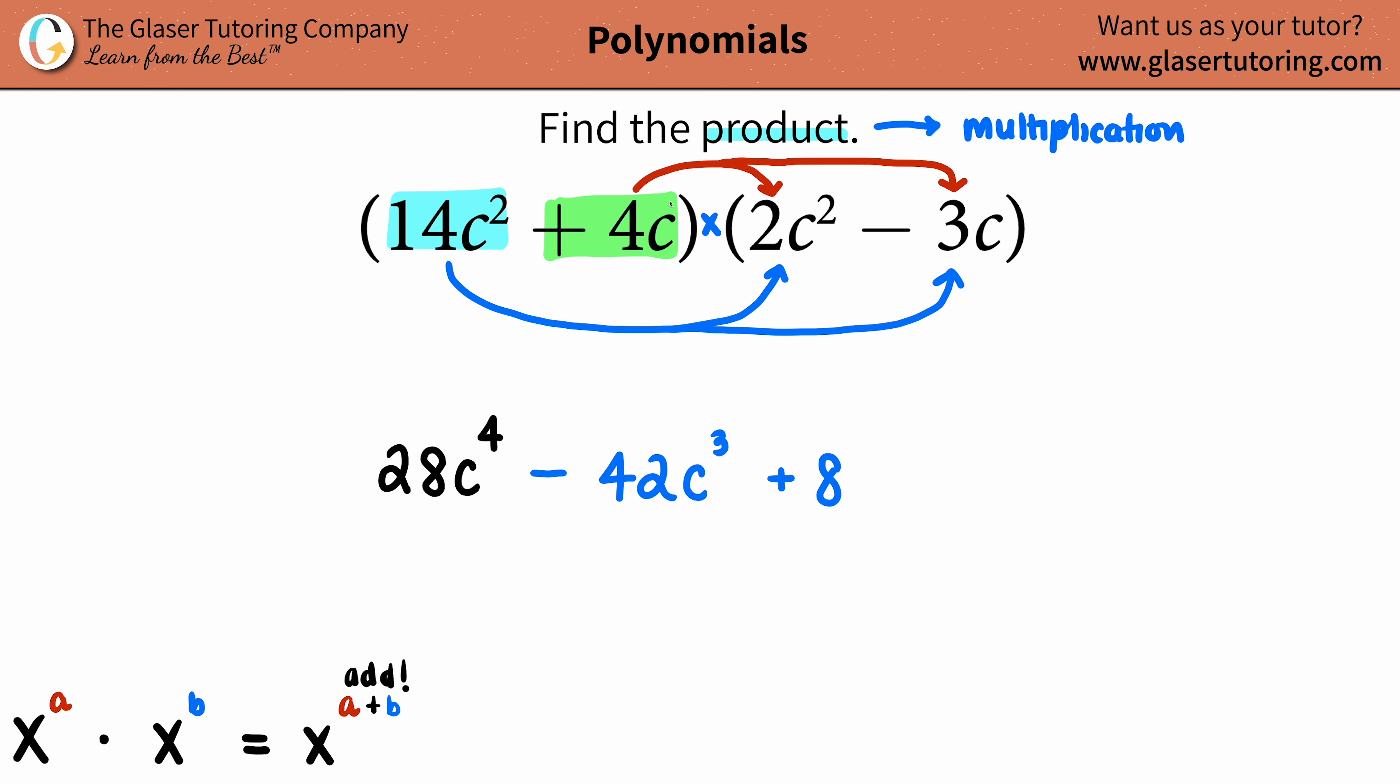Let's go for it. Do your numbers first. So positive 4 times 2, that's an 8, so we'll say plus 8. And now let's do our variables. I have a c to the first times a c to the second. 1 + 2 is, you're right, c to the three.